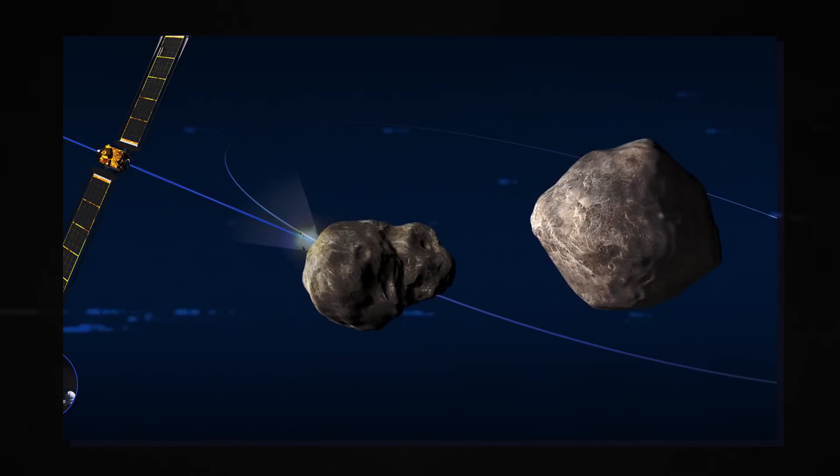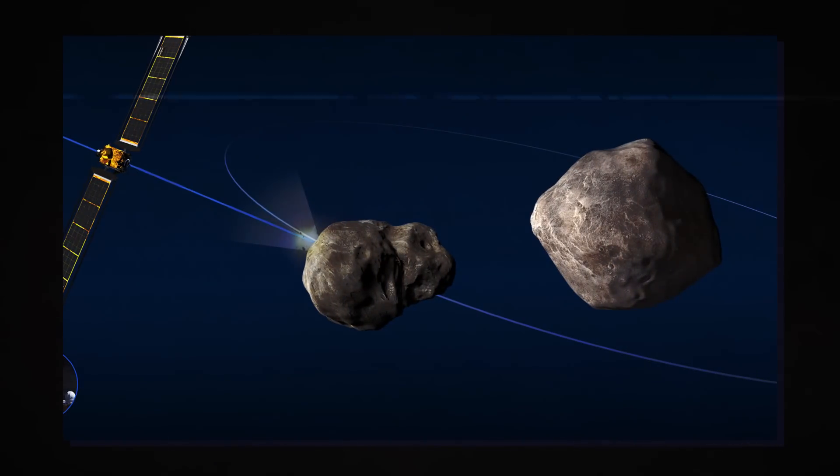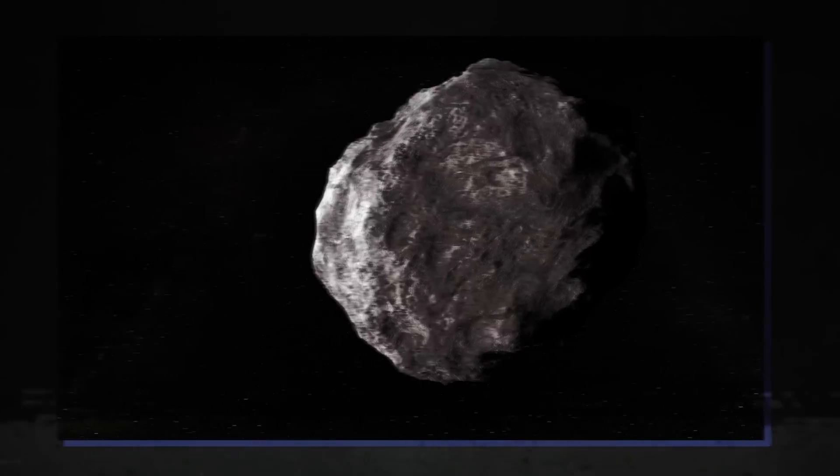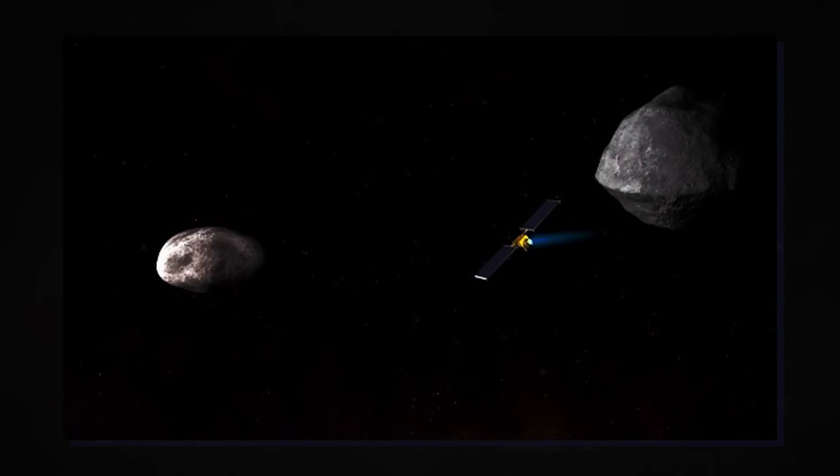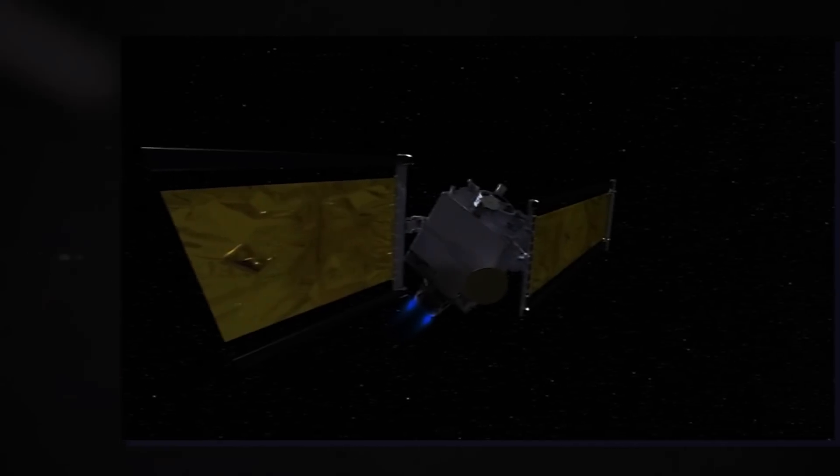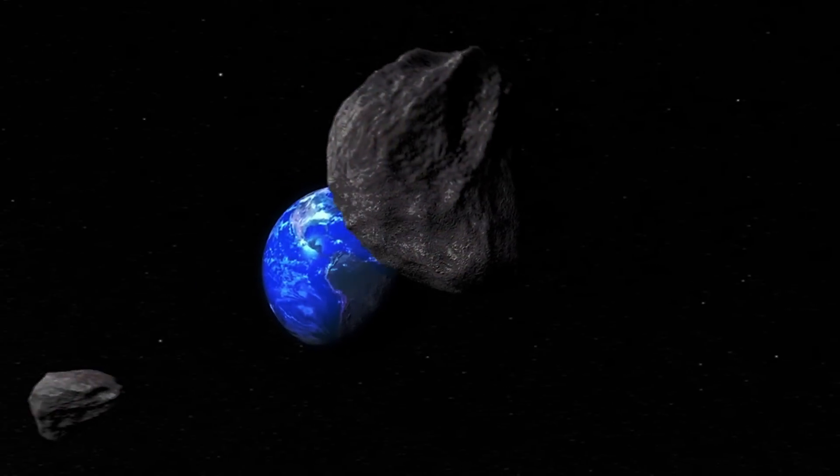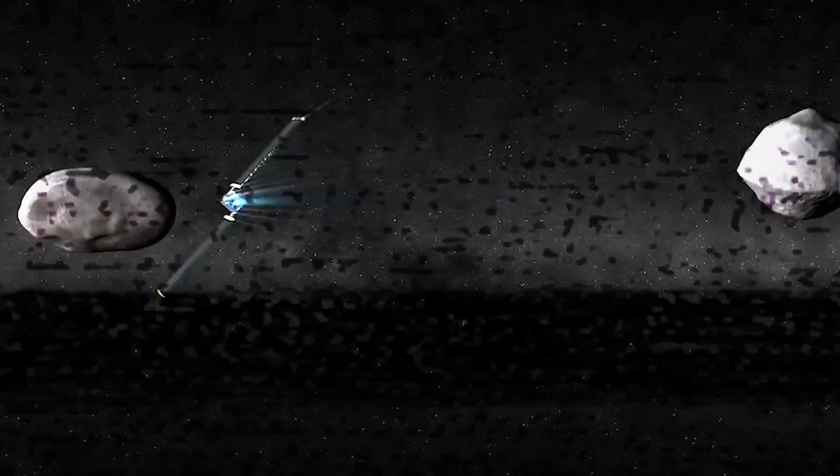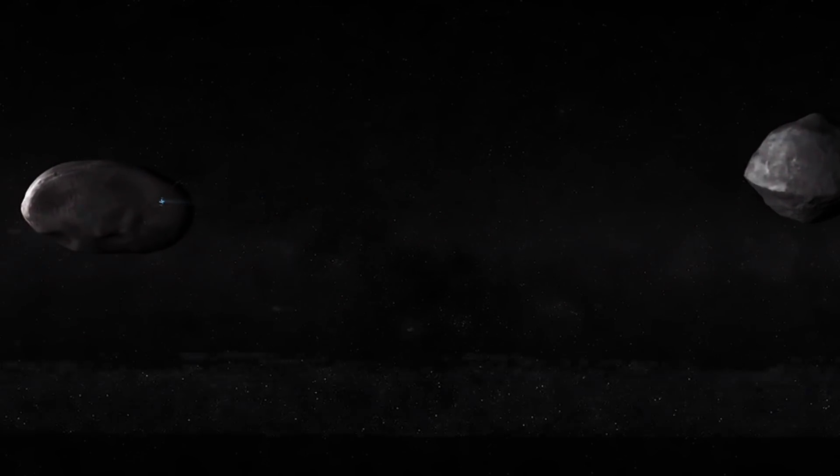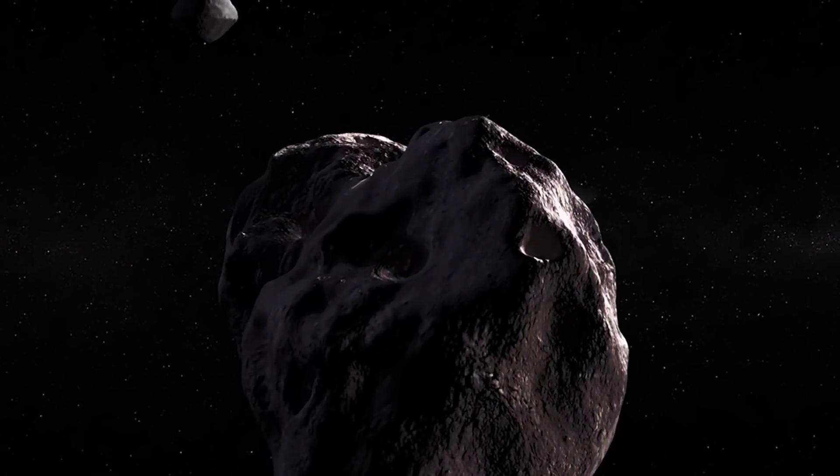When NASA's Double Asteroid Redirection Test (DART) collided with the asteroid moonlet Dimorphos, JWST even caught a glimpse of it. The space agency was able to examine the object's ability to influence the course of potentially dangerous asteroids that could cross Earth's path because of the impact's modest alteration of the object's orbit around its parent body, Didymos.